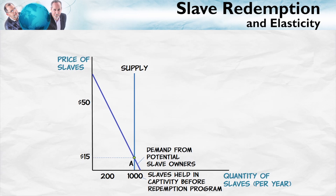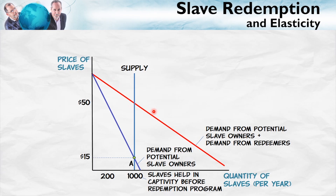With 1,000 people being enslaved every year. Now, what does the redemption program do? It increases the demand for slaves, shifting it out to this red curve — the demand from the potential slave owners plus the demand from the redeemer. With that new increased total demand, the equilibrium is at point B, with a price of $50 per slave. That increased price is a good thing, because it's precisely that higher price which discourages the potential slave owners from buying slaves — pricing them out of the market.